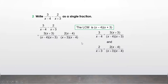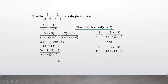When the denominator is the same, we simply write the denominator once and perform the operation on the numerators. The denominator is (x minus 4)(x plus 3) and the numerator is 3(x plus 3) minus 2(x minus 4). Let us now expand the brackets.